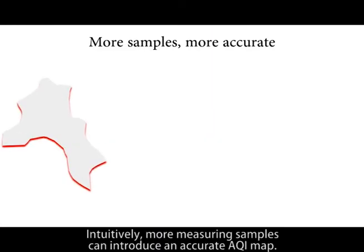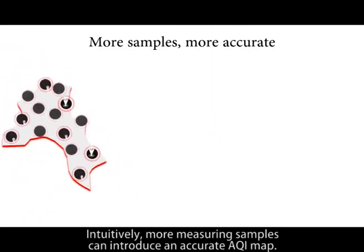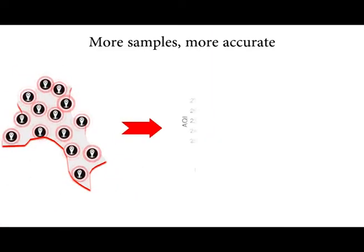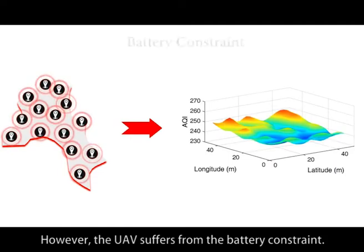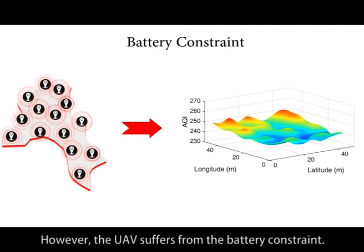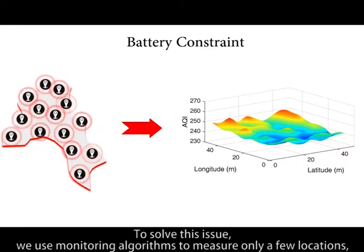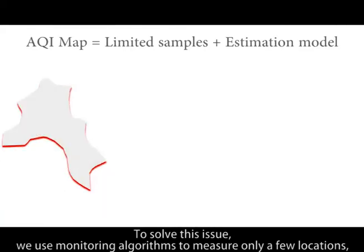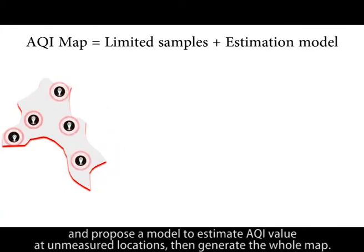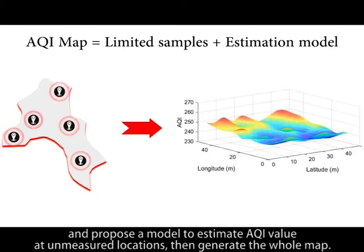Intuitively, more measuring samples can produce a more accurate AQI map. However, the UAV suffers from a battery constraint. To solve this issue, we use monitoring algorithms to measure only a few locations and propose a model to estimate AQI values at unmeasured locations, then generate the whole map.